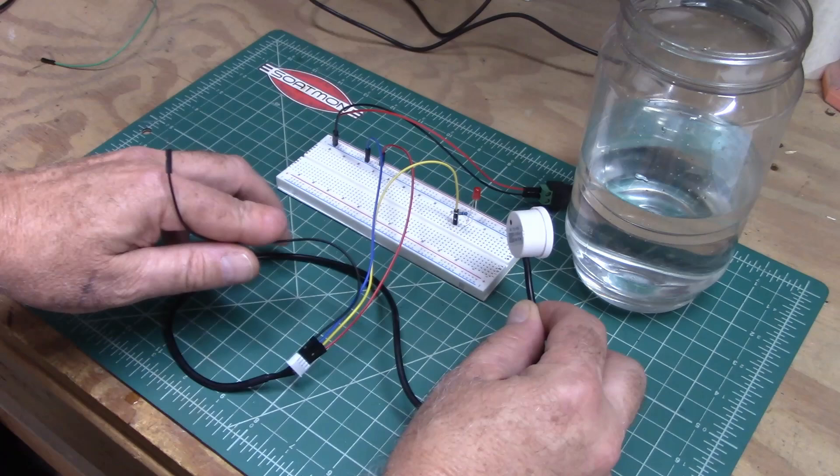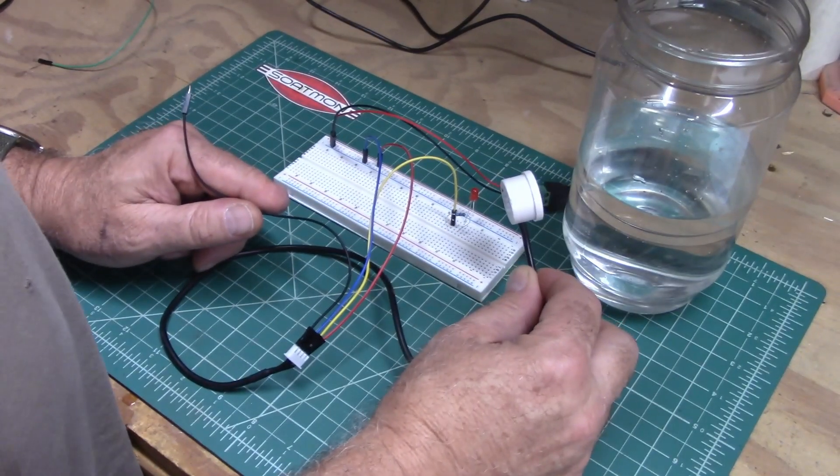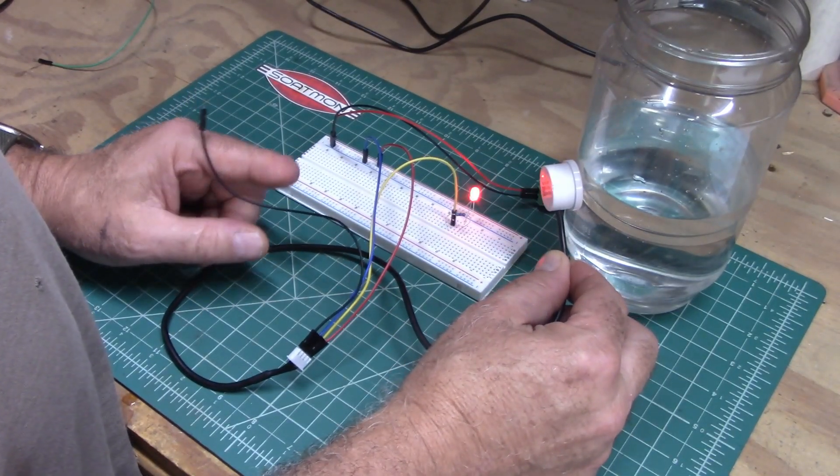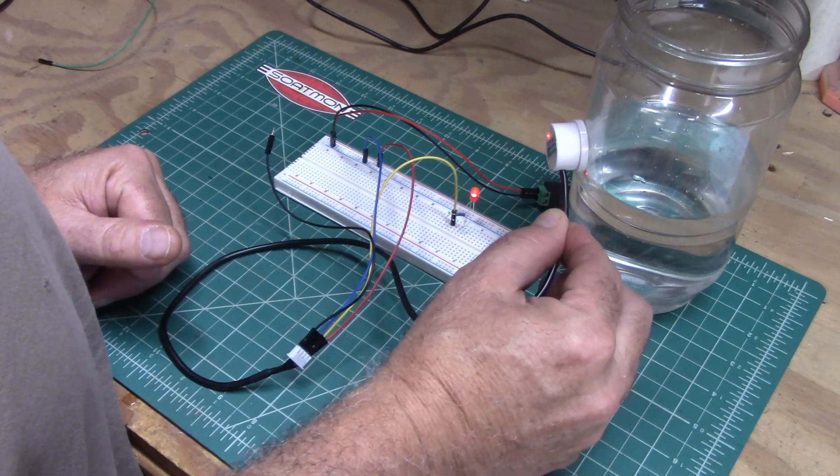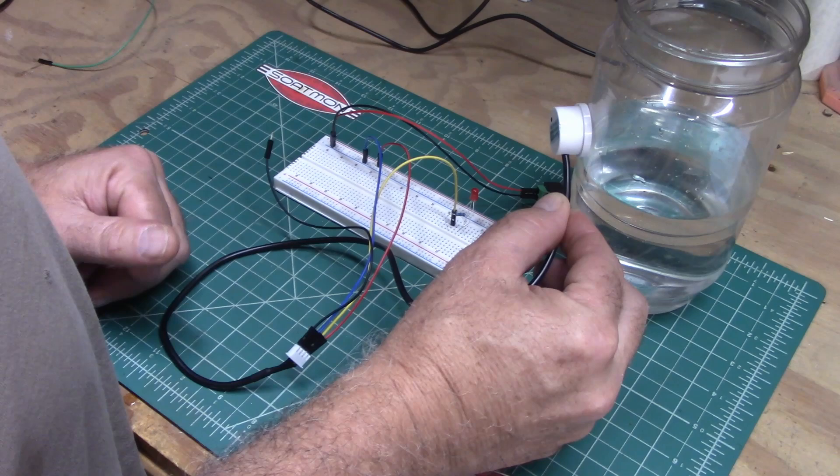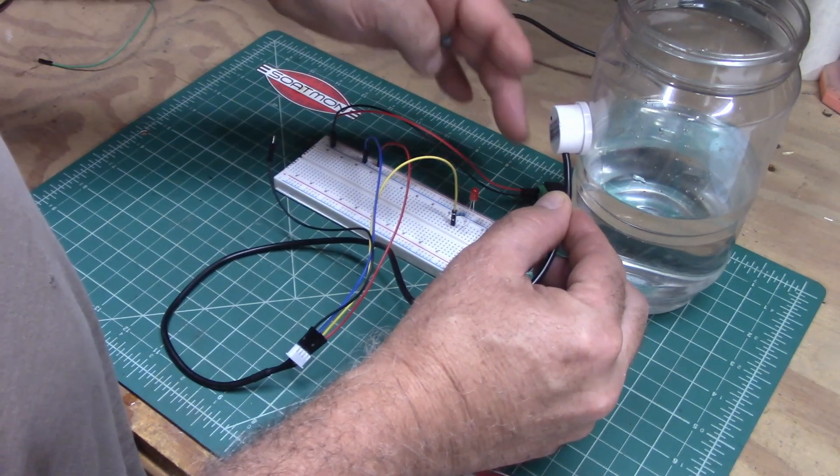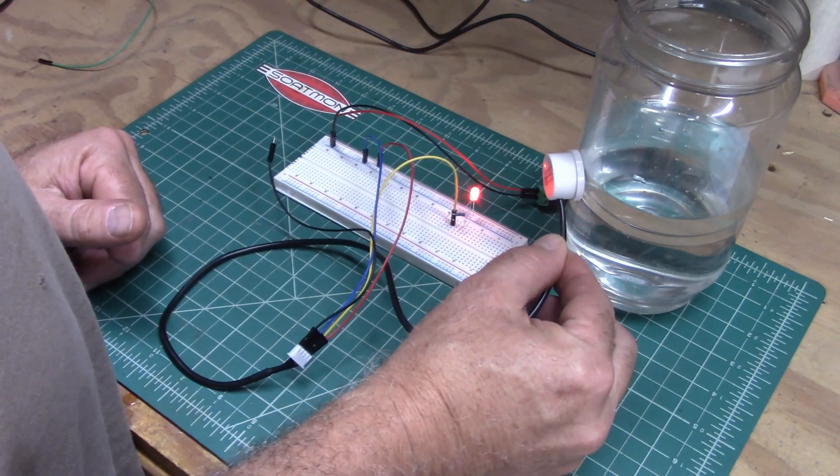So if we look at this jar over here, when it detects water it's going to flash. As it moves up the water column you don't see anything, and then as it moves down you see water.